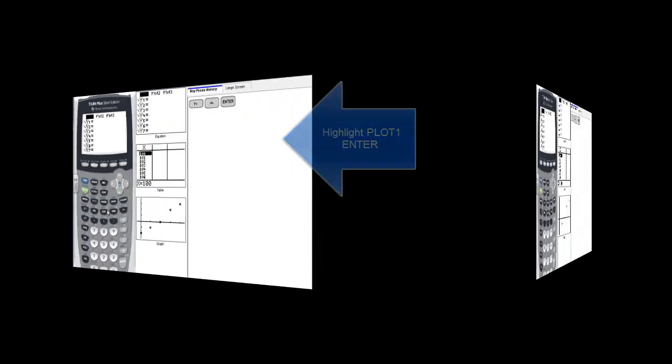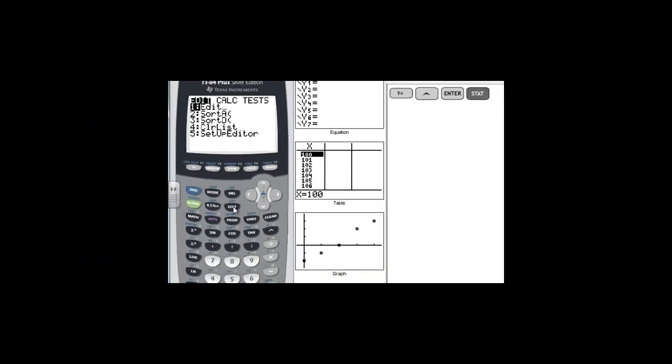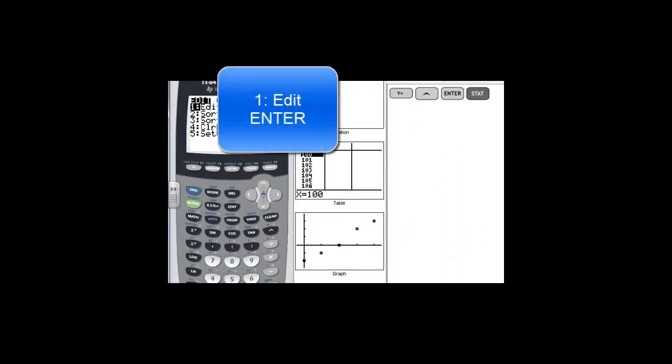So let's put some points in. We need to hit the stat key, and then we need to edit, which is option 1, and it's already highlighted, so we press enter.